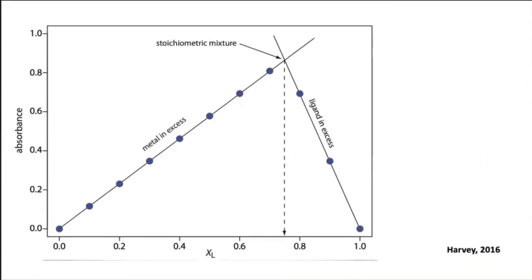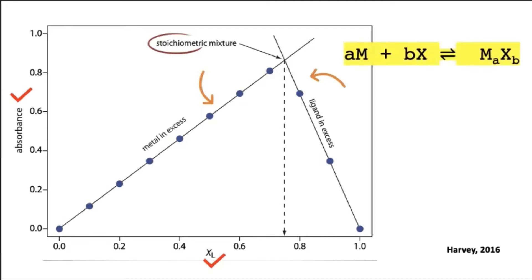Suppose we monitor the complexation reaction at a wavelength where only the metal-ligand complex absorbs. In that case, a graph of absorbance versus the mole fraction of the ligand has two linear branches: one when the ligand is the limiting reagent, and a second when the metal is the limiting reagent. The intersection of the two branches represents a stoichiometric mixture of the metal and the ligand. We use the mole fraction of the ligand at the intersection to determine the values of A and B for the metal-ligand complex MₐXᵦ.